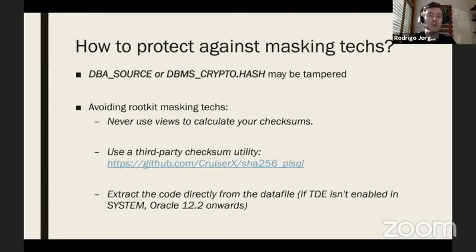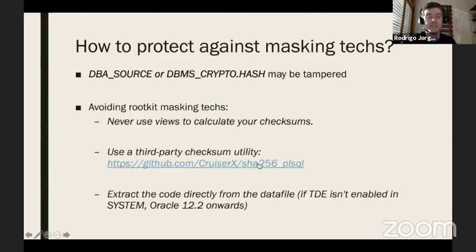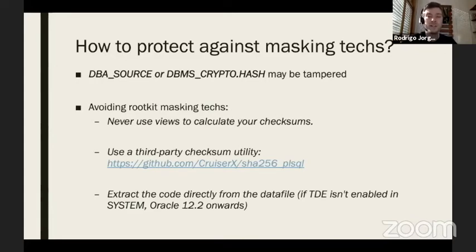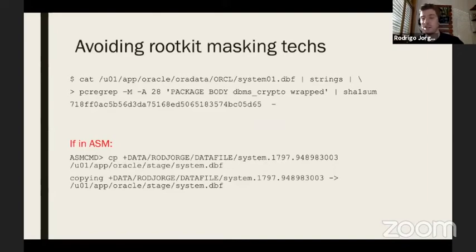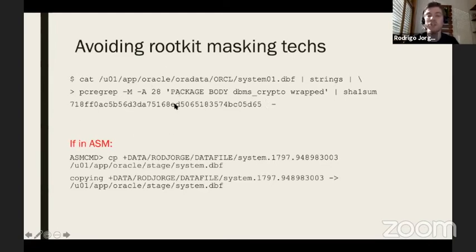To avoid these masking techniques, I don't use DBA_SOURCE to retrieve the code — I go directly to the underlying tables. I also don't use DBMS_CRYPTO to create hashes; instead, I use a third-party tool available on GitHub that you can create on your schema to generate code hashes. Another way is to go directly to the data files — using 'strings' on the system datafile and piping to SHA1SUM to create a checksum without using the database engine at all.